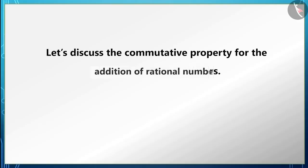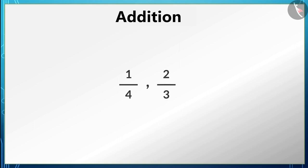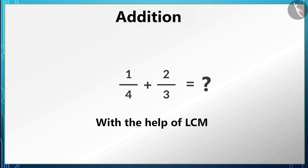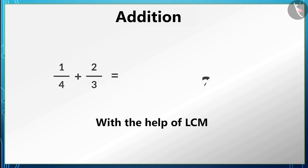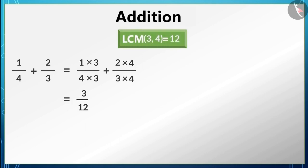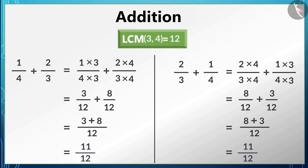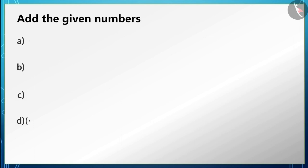Let us now discuss the commutative property of addition of rational numbers. Suppose we have two rational numbers — we add them using the least common multiple (LCM) method. The LCM of the denominators is 12, giving an answer of 11/12. Now let's change their order and add again — the answer is still 11/12.